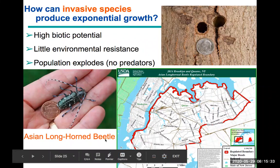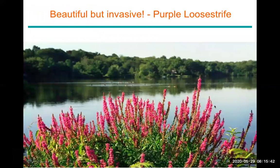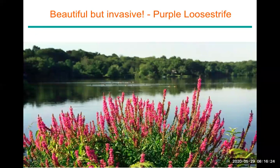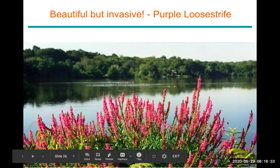Another invasive species is the purple loosestrife, a plant found along the Hudson River and other major river systems. Though it looks beautiful, it is extremely difficult to eradicate. Scientists and naturalists have spent decades trying to eliminate it because once it invades open water environments, it crowds out native plant species and prevents native animals such as ducks and frogs from living there. Its dense root systems and stems are very hard to remove, and it produces millions of seeds each flowering cycle.